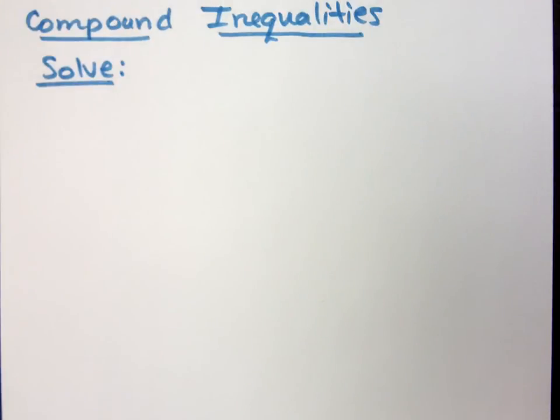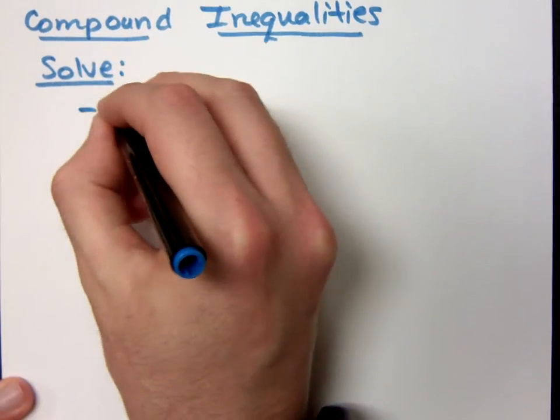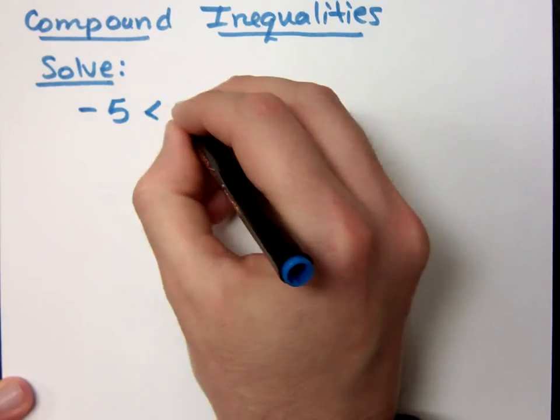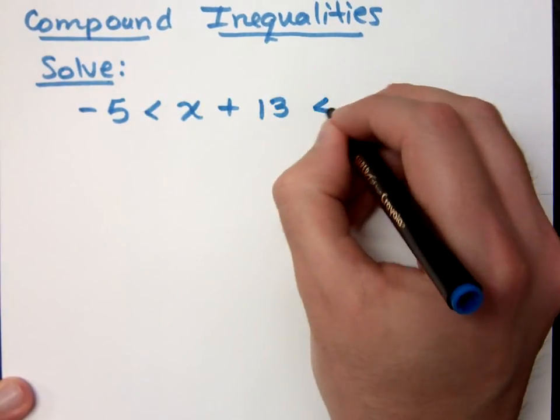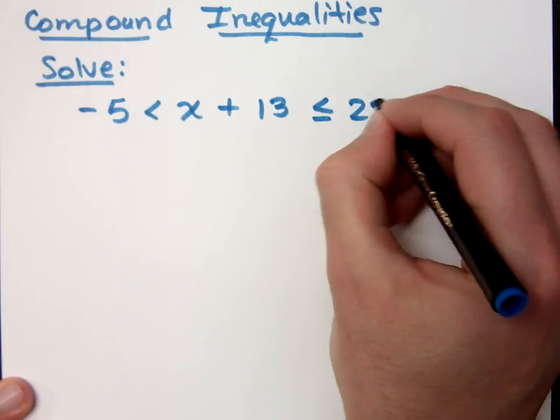Let's keep moving along and talk about compound inequalities. Now a compound inequality is when you have more than one inequality together. So if I ask you to solve negative 5 is less than x plus 13 is less than or equal to 22.